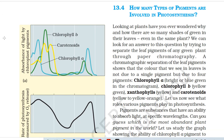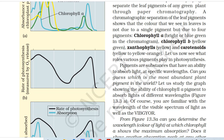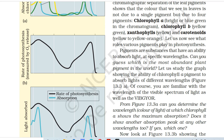13.4 How many types of pigments are involved in photosynthesis? Looking at plants, have you wondered why there are so many shades of green in the leaves? We can look for an answer by separating the leaf pigments through paper chromatography. A chromatographic separation shows that the color we see in leaves is not due to a single pigment but due to four pigments: chlorophyll A (bright or blue-green), chlorophyll B (yellow-green), xanthophyll (yellow), and carotenoids (yellow to yellow-orange). Pigments are substances that have the ability to absorb light at specific wavelengths. Can you guess which is the most abundant plant pigment in the world?